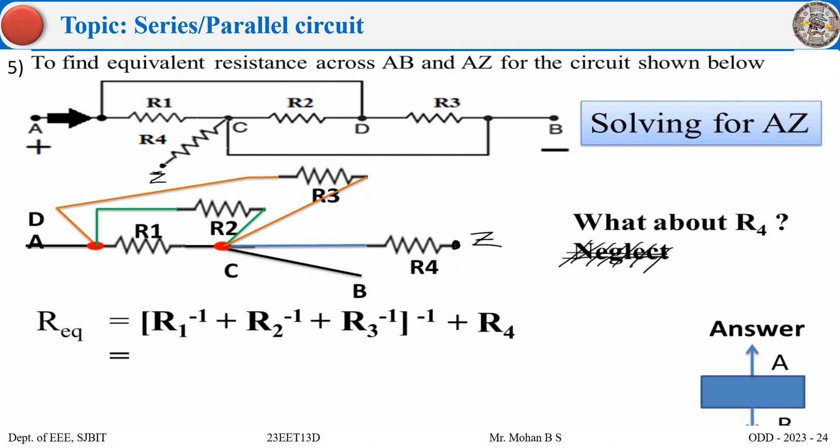These three branches are together parallel. We get one value and then the entire value is in series with R4. So whatever is the value, respectively substitute for R1, R2, R3, R4 and then you can find your answers. So that is a problem to find R equivalent across A and B as well as A and Z for the circuit shown.